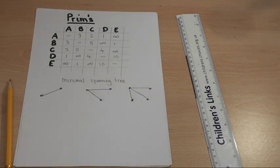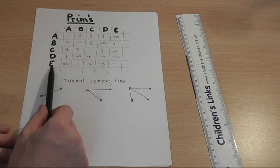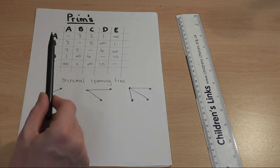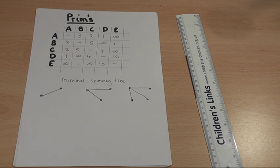Now Prim's is a way of finding the smallest or lowest way of connecting a given number of nodes. In this case we've got five nodes A, B, C, D, and E. I want to find the smallest way of connecting these five nodes. Now Prim's works best in the table—it's a source of very easy marks, but just watch this carefully.